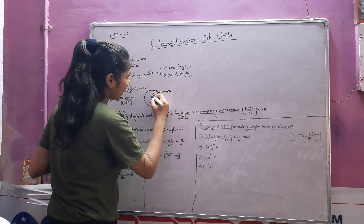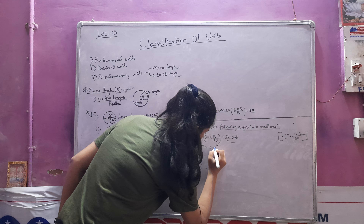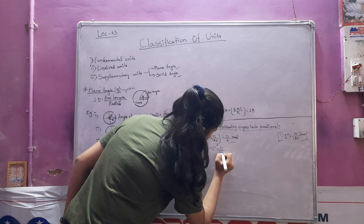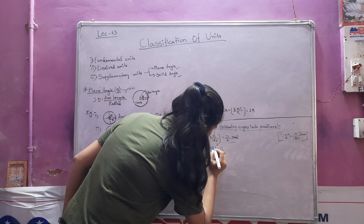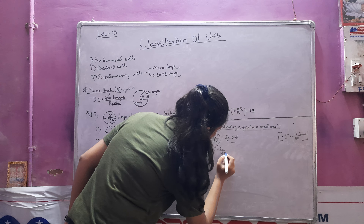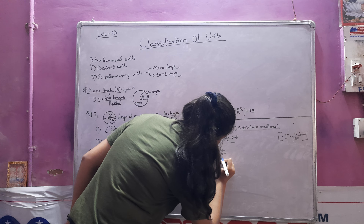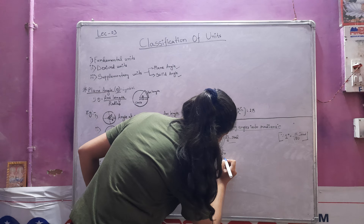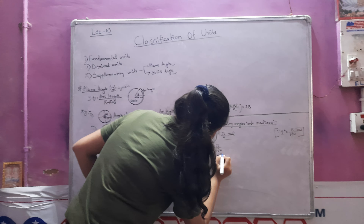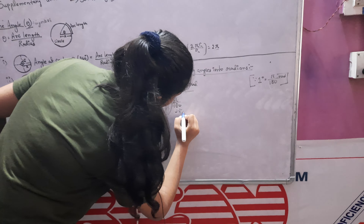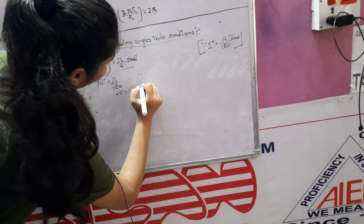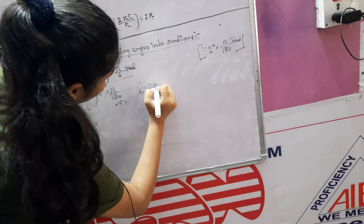Likewise, for 45 degrees, we multiply 45 by π/180. Simplifying: 45/180 reduces to 1/4, so we get π/4 radians.